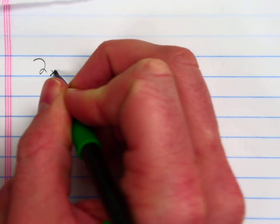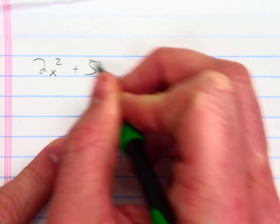Okay, here I've got a video about how to factor trinomials using the box method. So I'm going to begin with the trinomial 2x squared plus 5x plus 2.